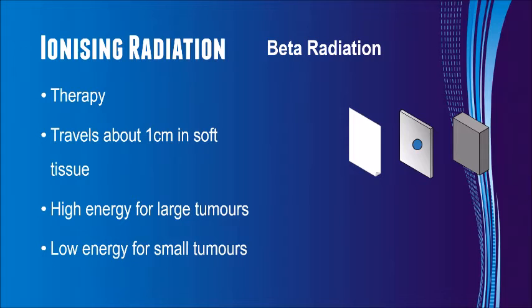High energy beta particles are preferable for delivering therapy to larger tumours as they can penetrate up to one centimetre through soft tissue. However, low energy beta particles are desirable in the treatment of smaller tumours because they travel shorter distances.